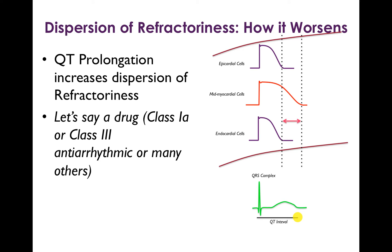Now let's talk about how dispersion of refractoriness can become even more heterogeneous than it already is. The main thing to know is that QT prolongation increases dispersion of refractoriness. In this example, let's say it's a class 1a or class 3 antiarrhythmic drug — there are also many other drugs that can do it, for example fluoroquinolones and several other classes of drugs.